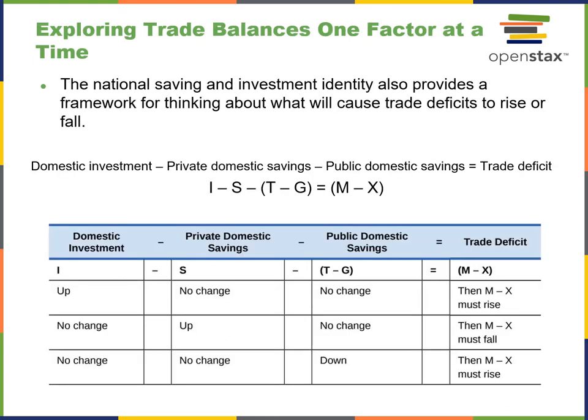The national savings and investment identity also provides a framework for predicting what will cause trade deficits to rise or fall based on the behavior of several factors. The table shows that if domestic investment goes up, savings doesn't change, and the difference between taxes and government spending does not change, then M minus X must rise. This is a ceteris paribus situation — holding certain variables constant — and this type of analysis is likely to appear on a test.